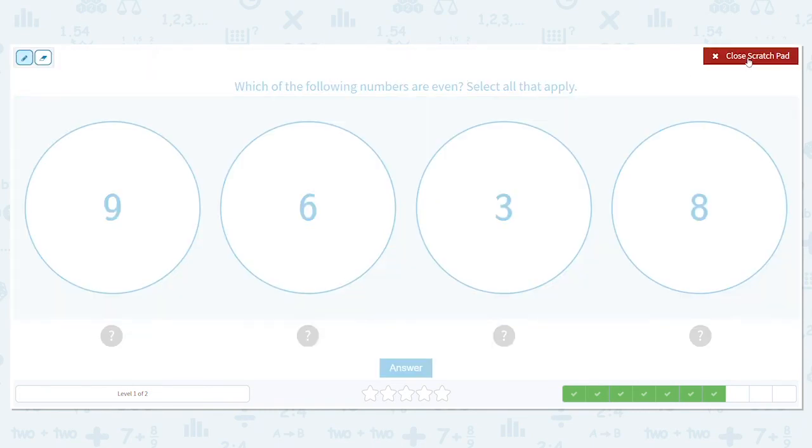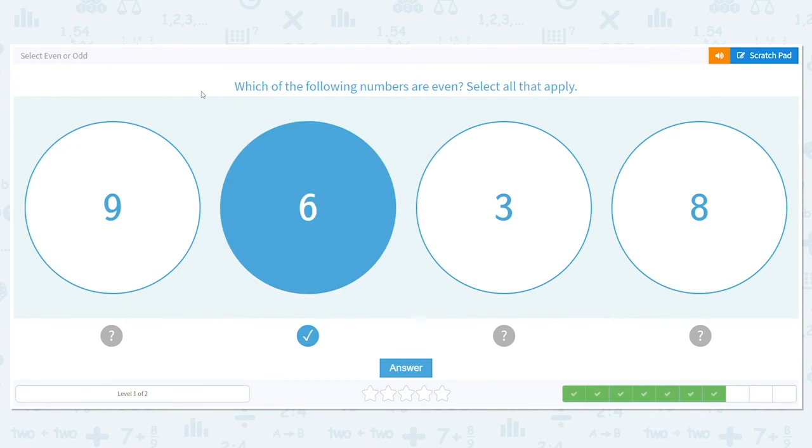How about here? Even. I see two. Well, we know six is one of them because we just did that. Which other number here is even? It's eight. Nice job.